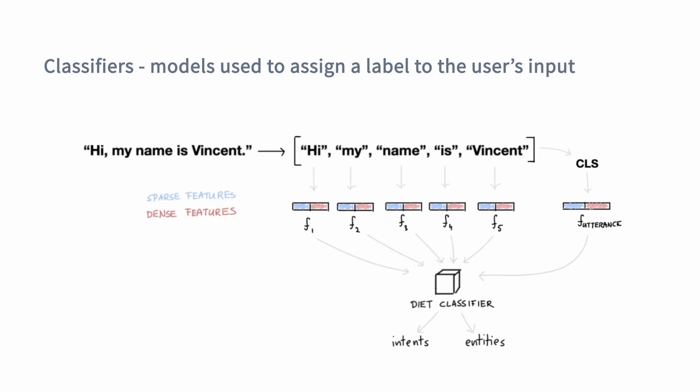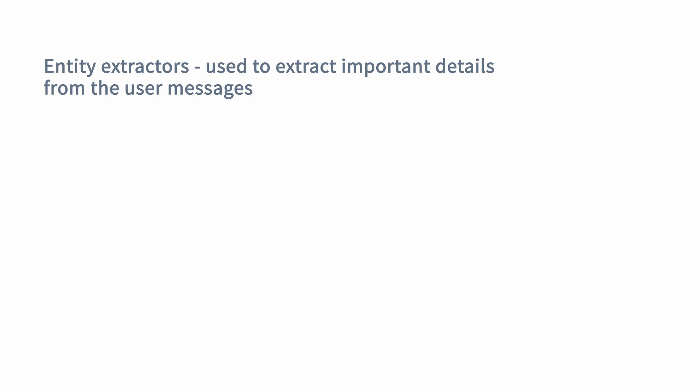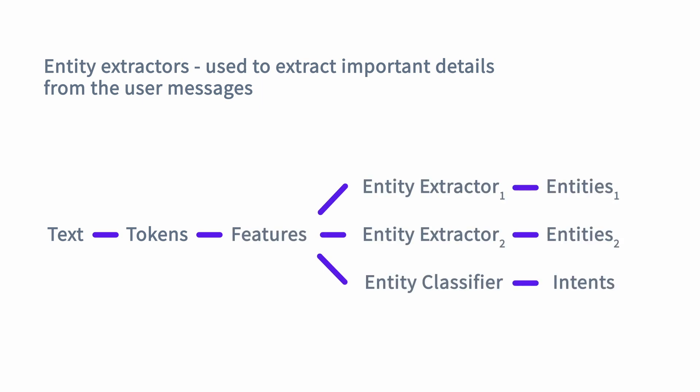Next, you can define intent classifiers for intent classification. Intent classifiers use the features extracted by featurizer components. The most powerful intent classification model available in Rasa is called the DIET classifier. One of the core features of this classifier is that it does both intent classification and entity extraction. The DIET classifier usually outperforms other intent classification models available in Rasa open source and comes with a bunch of different parameters that you can configure to best suit your use case. If you are using the DIET classifier for intent classification, this model can handle entity extraction for you as well.